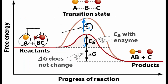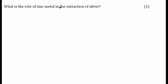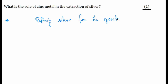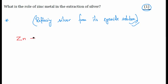Now the second question: what is the role of zinc metal in the extraction of silver? This question also comprises one mark. Very simple — zinc is basically replacing silver from its cyanide solution. You must also write the equation; although it is one mark, writing the equation makes your answer representation very good.